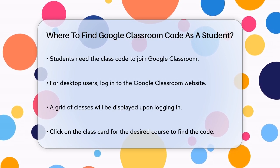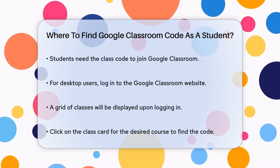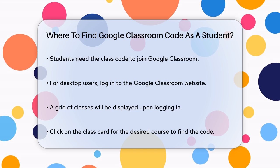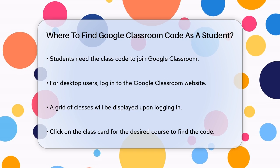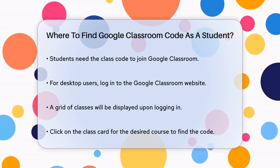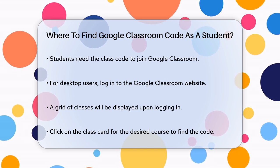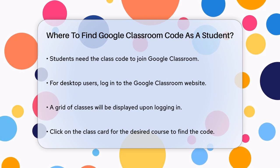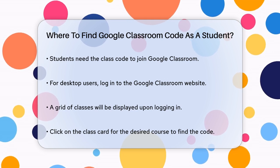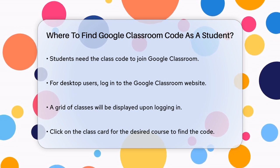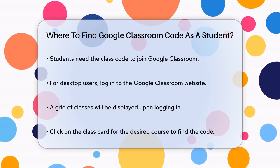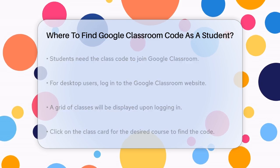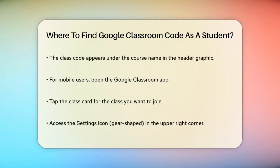Let's start with the desktop version. When you log into the Google Classroom website, you'll see a grid of your classes. Click on the class card for the course you're interested in. The class code will be right there under the course name in the header graphic. It's that simple.